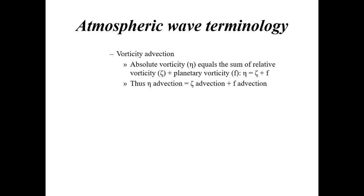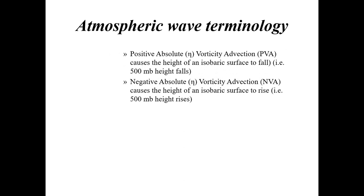If you've watched my forecast videos, I'll throw up a 500 millibar chart — the yellows, oranges, and reds on that chart indicate positive vorticity advection, meaning higher values of vorticity being blown into my area. Positive vorticity advection is generally associated with upper-level troughs and results in rising air motion. Negative vorticity advection results in sinking air motion, is generally associated with fair weather, and causes heights to rise.